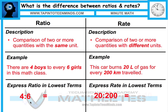Just showing you quickly how you can reduce or show them in lowest terms. In our first case, four to six — we can divide both numbers by two and end up with a new ratio of two to three. In our second case, we can divide both numbers by 20 and end up with a new rate of one to ten.